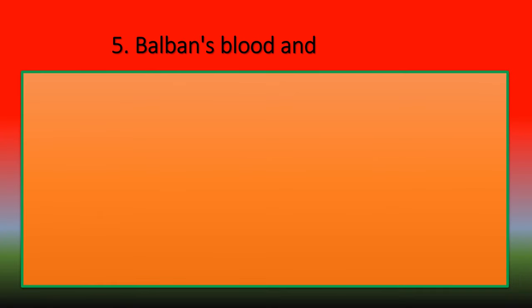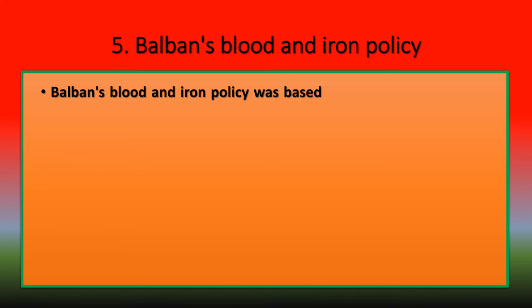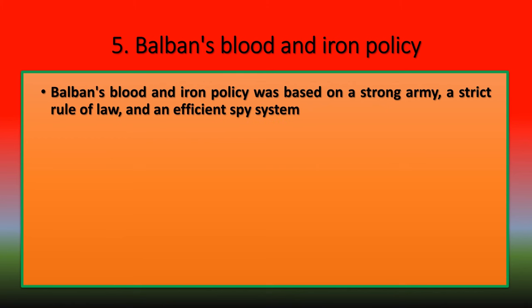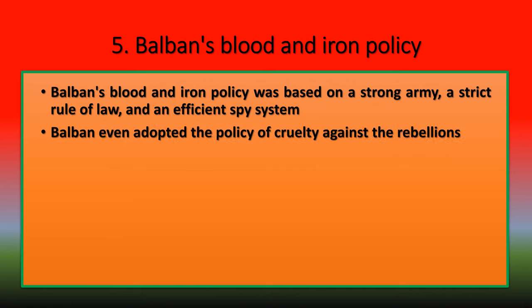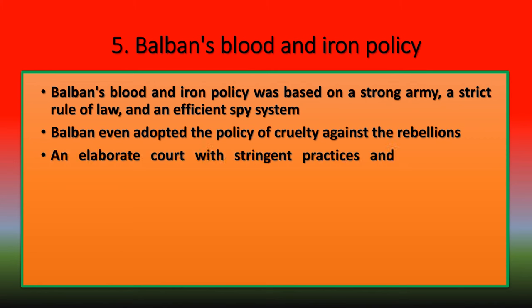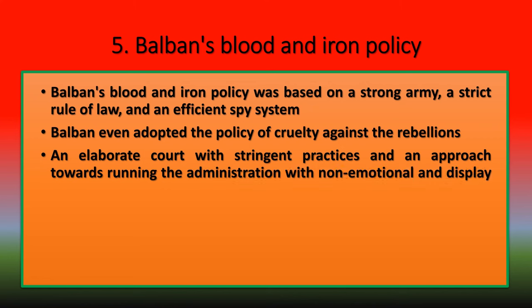Balban's blood and iron policy was based on a strong army, a strict rule of law, and an efficient spy system. He even adopted the policy of cruelty against rebels. An elaborate court with stringent practices and a non-emotional, controlled approach to running the administration formed the essence of his blood and iron policy.